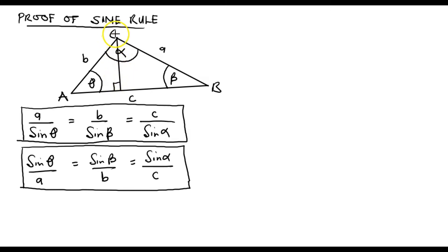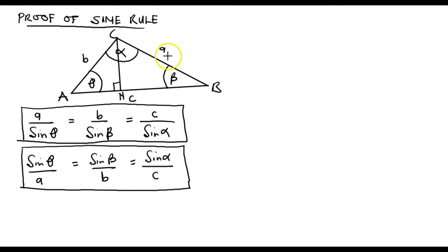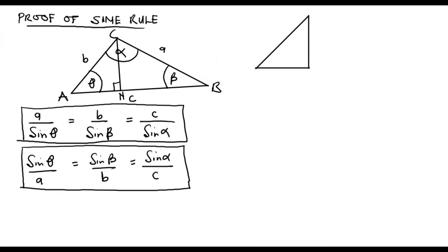The length from C meeting AB is perpendicular, and therefore it has partitioned the triangle into two halves. We can label the point of intersection of the perpendicular line as N. So right now our triangle has been partitioned into two right angle triangles. The first one is triangle A, N, and C.